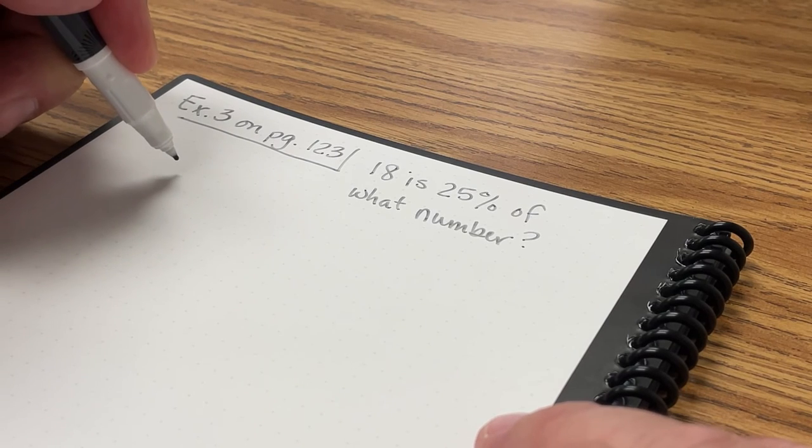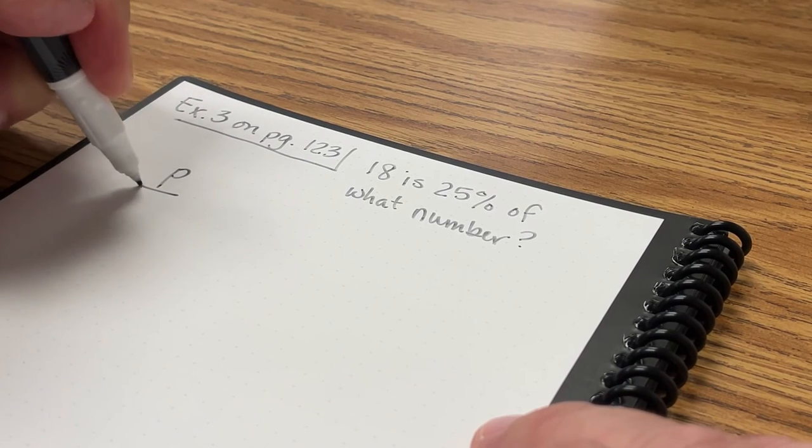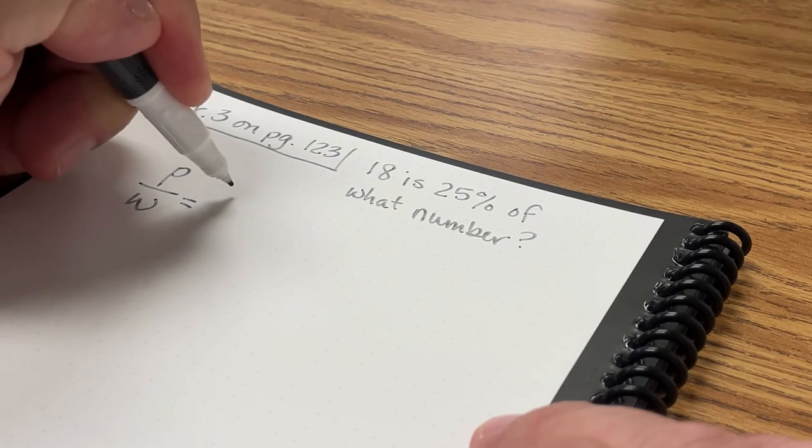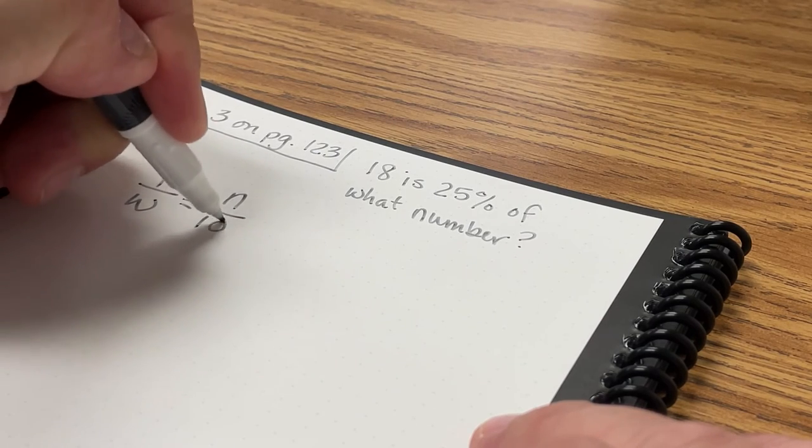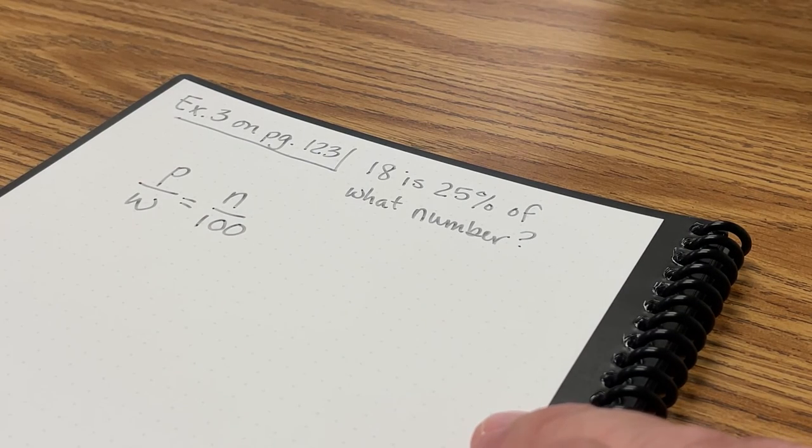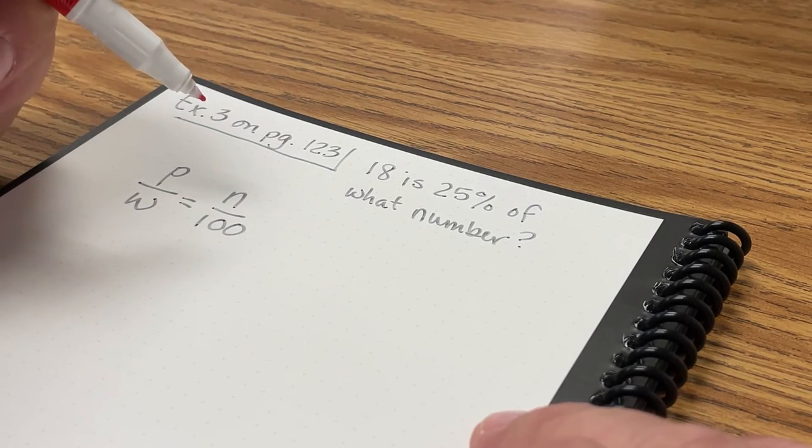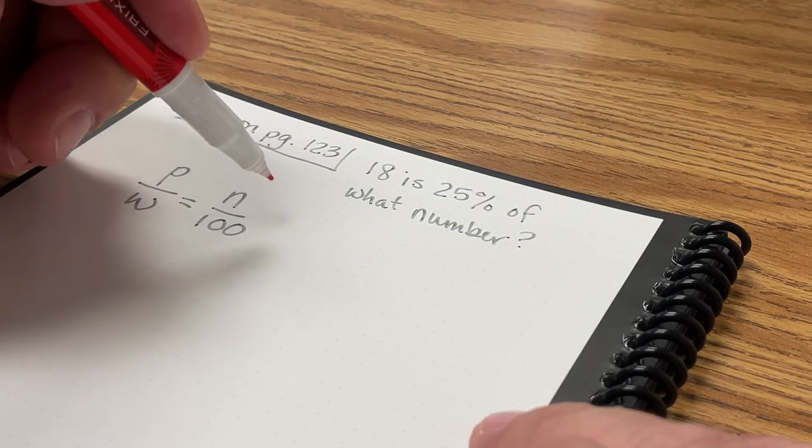In our last example, Example 3 on page 123, we want to know 18 is 25% of what number. Once again, I'm going to start out with the percent proportion: P over W equals N over 100.